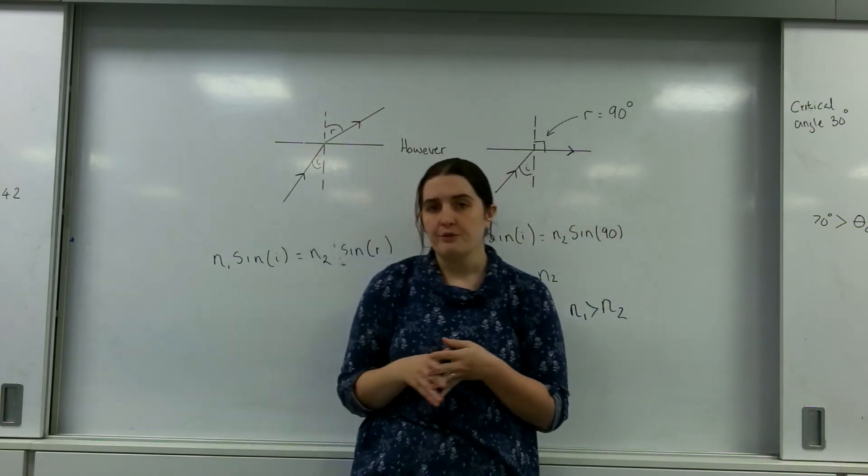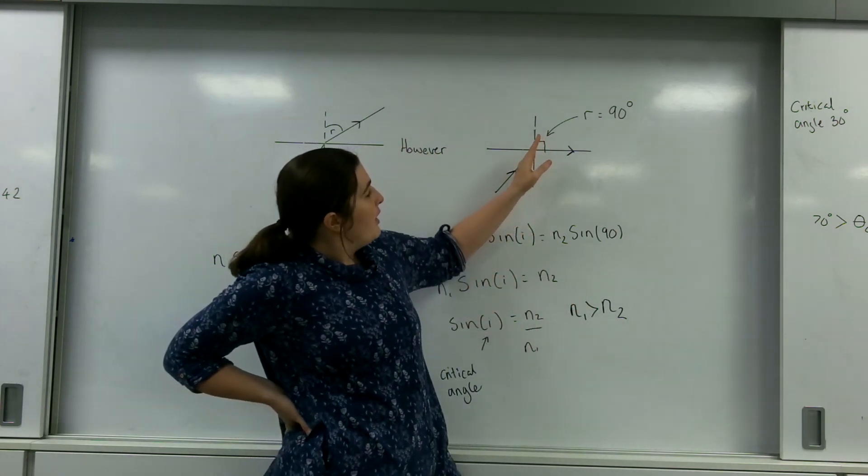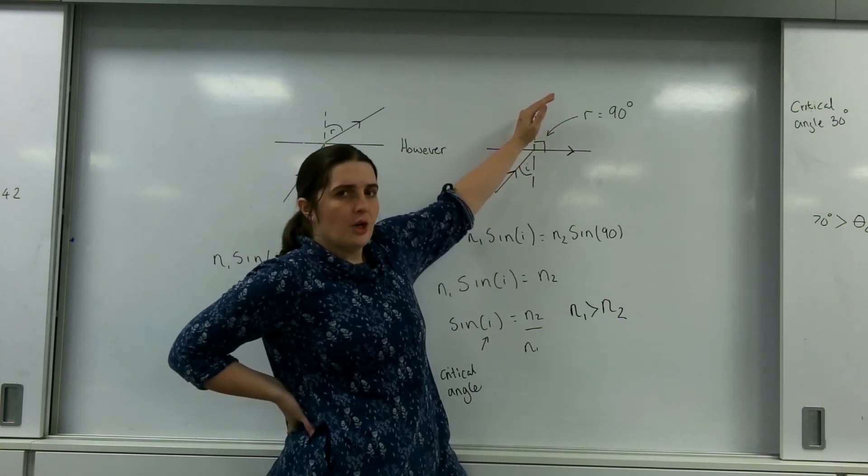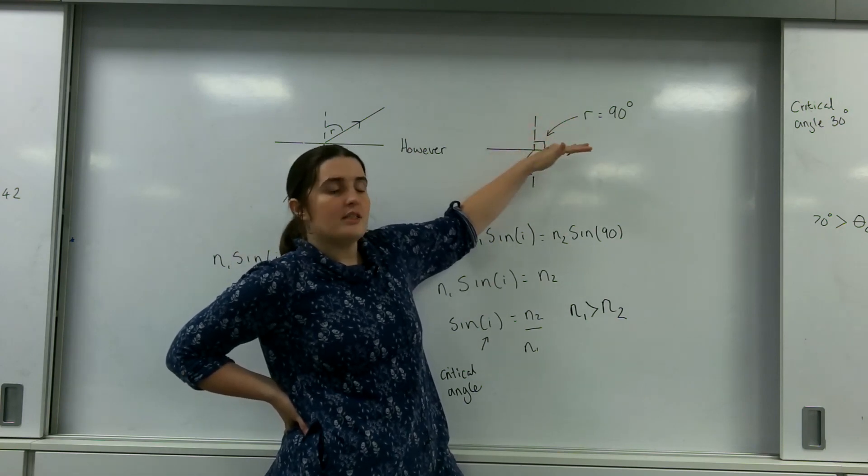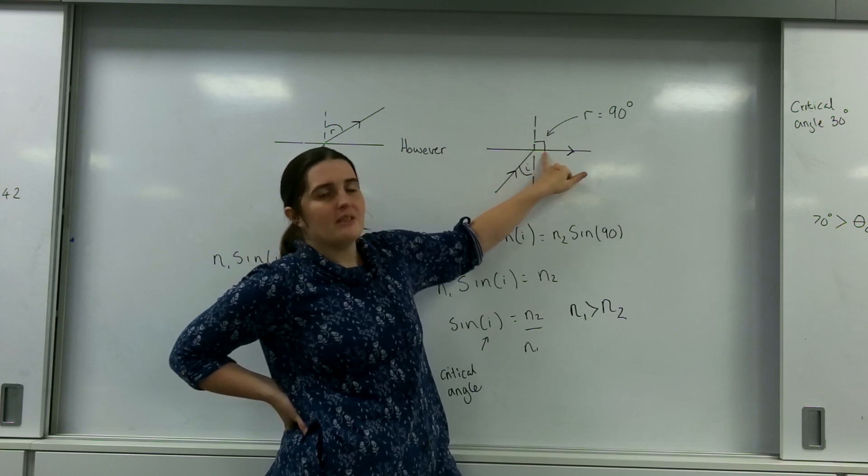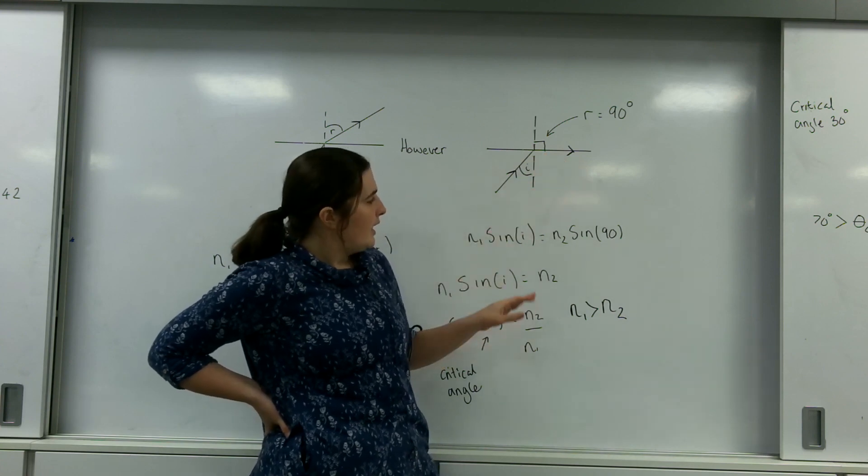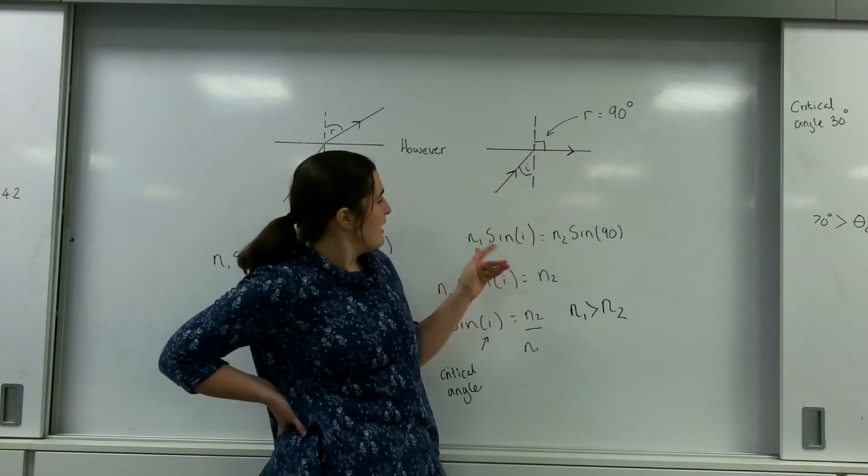Now total internal reflection is a very special case, and this is it here. When my angle of refraction is so large that it's actually at 90 degrees, and at this point here, it's actually not leaving the material at all. It's almost like it's stuck inside.